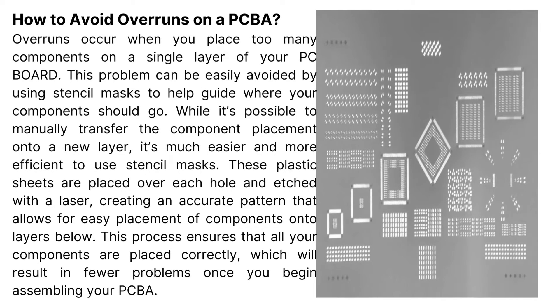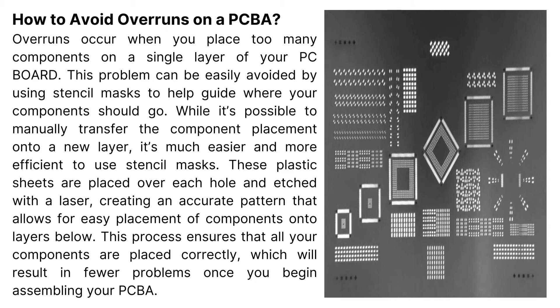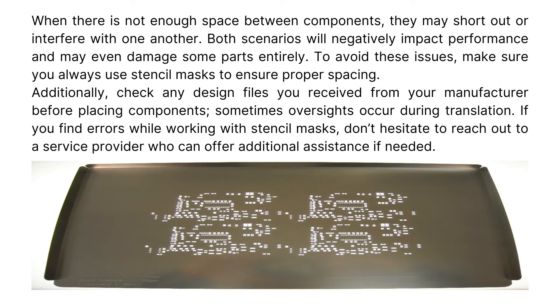Overruns occur when you place too many components on a single layer of your PCB. This problem can be easily avoided by using stencil masks to help guide where your components should go. These plastic sheets are placed over each hole and etched with a laser, creating an accurate pattern that allows for easy placement of components onto layers below. This ensures that all components are placed correctly, resulting in fewer problems during assembly. When there is not enough space between components, they may short out or interfere with one another. Always use stencil masks to ensure proper spacing.